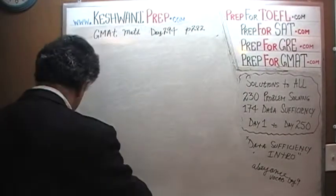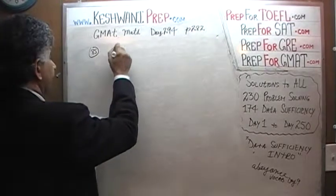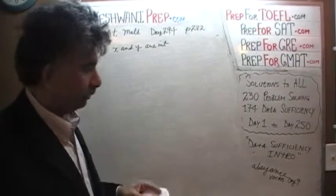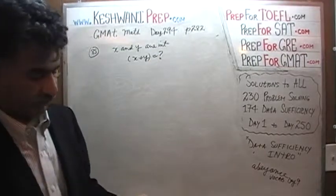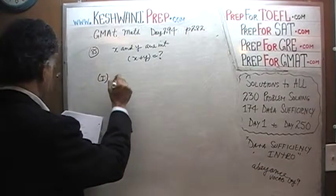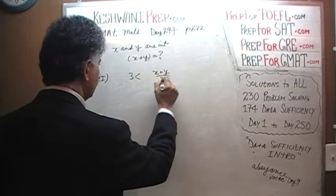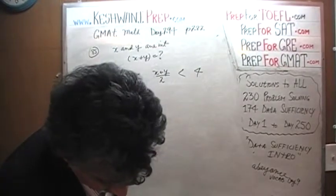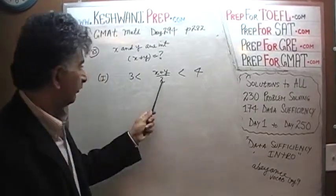In number 85, they tell us that X and Y are integers — they are whole numbers. The question simply is: how much is X plus Y? In the first statement, they tell us that 3 is less than (X plus Y) over 2, which in turn is less than 4. In other words, what they are telling us is that the average of these two numbers is between 3 and 4.